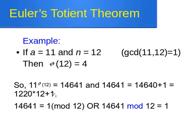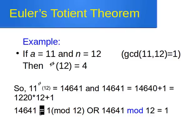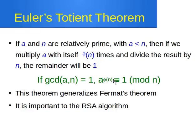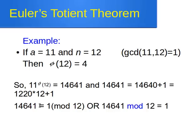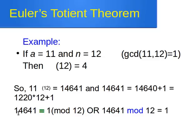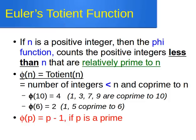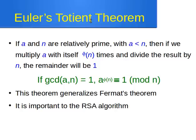In other words, that should be written with the congruence symbol — the triple line. So 14,641 is congruent to 1 modulo 12, or equivalently, 14,641 mod 12 equals 1. That is Euler's totient theorem. Now that you're familiar with Euler's totient function and Euler's theorem, you have the foundation needed to understand the RSA algorithm and why it works. Thank you very much for watching and I'll see you in the next video.